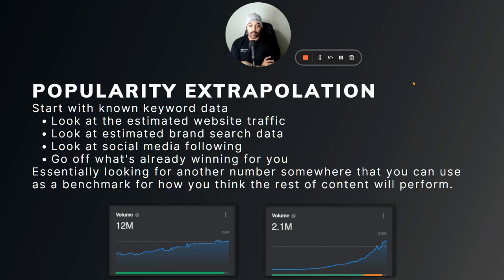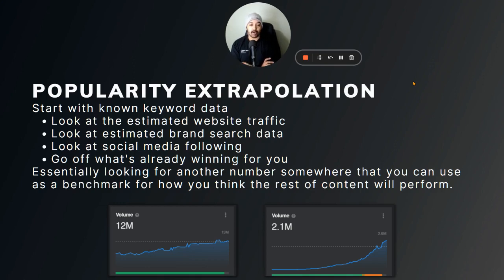You can also look at what's already winning for you. This is kind of what I started doing — I was doing it from a spreadsheet, more systematic content creation. I just didn't know it had a name at the time. Essentially what you're looking for is another number somewhere that you can use as a benchmark for how you think the rest of the content will perform.